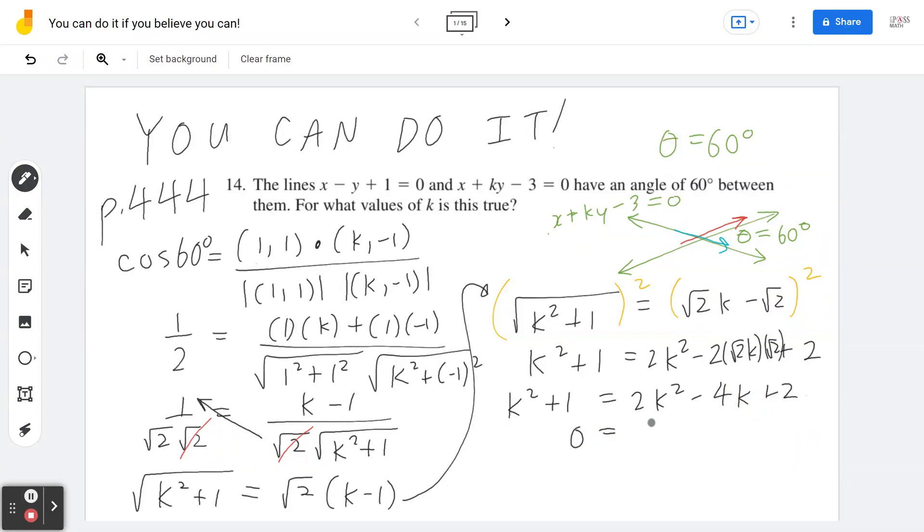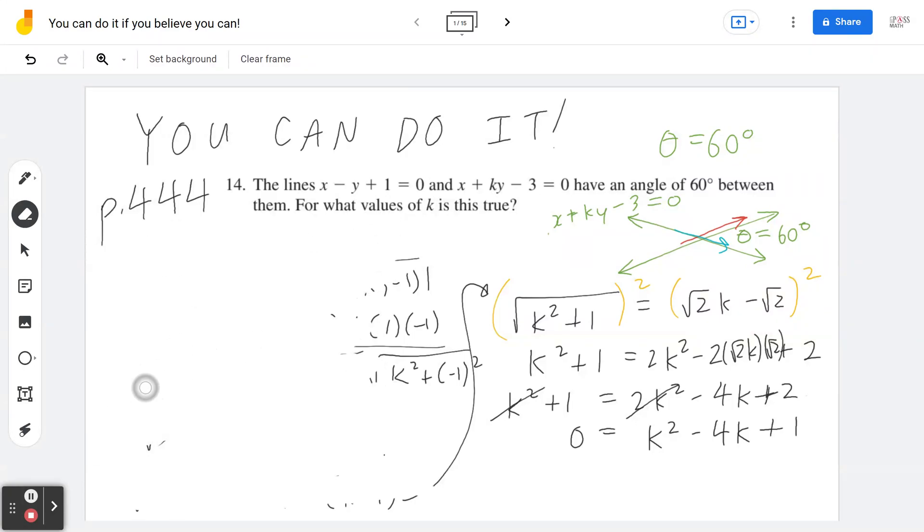I can bring everything to one side. 2k squared minus k squared is k squared. Minus 4k. If I bring the 1 to the other side, 2 minus 1 is 1. Now my goal is to solve for k. To solve for k, you can try factoring or you can use the quadratic formula. I want to write all this on one whiteboard, so I'm erasing some of this. We're going to apply the quadratic formula. x equals negative b plus or minus the square root of b squared minus 4ac divided by 2a.